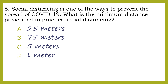Number 5. Social distancing is one of the ways to prevent the spread of COVID-19. What is the minimum distance prescribed to practice social distancing? A. 0.25 meters. B. 0.75 meters. C. 0.5 meters. D. 1 meter.